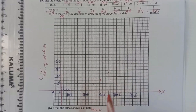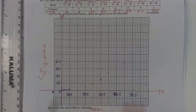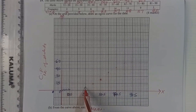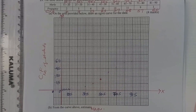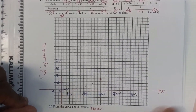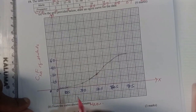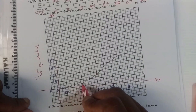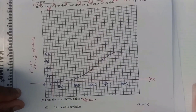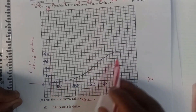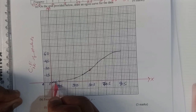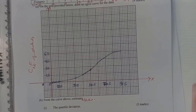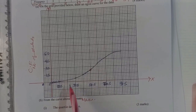Now it's time to draw a smooth curve passing through all those points — we have the first one here, second here, third here, and so on. That is how you draw the ogive curve by joining all the points with a smooth curve. To avoid the first point hanging, you can always join it to the origin.